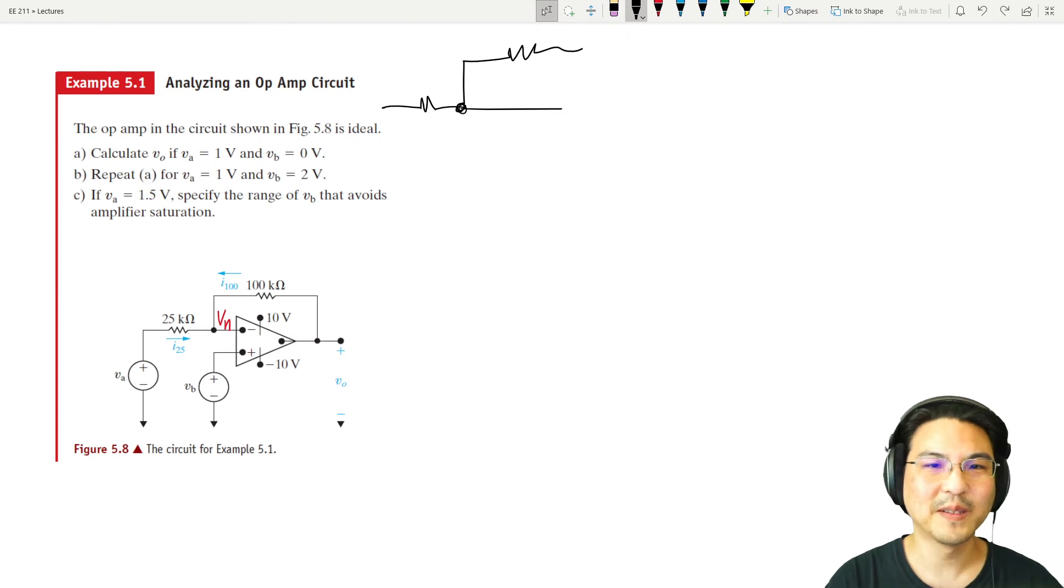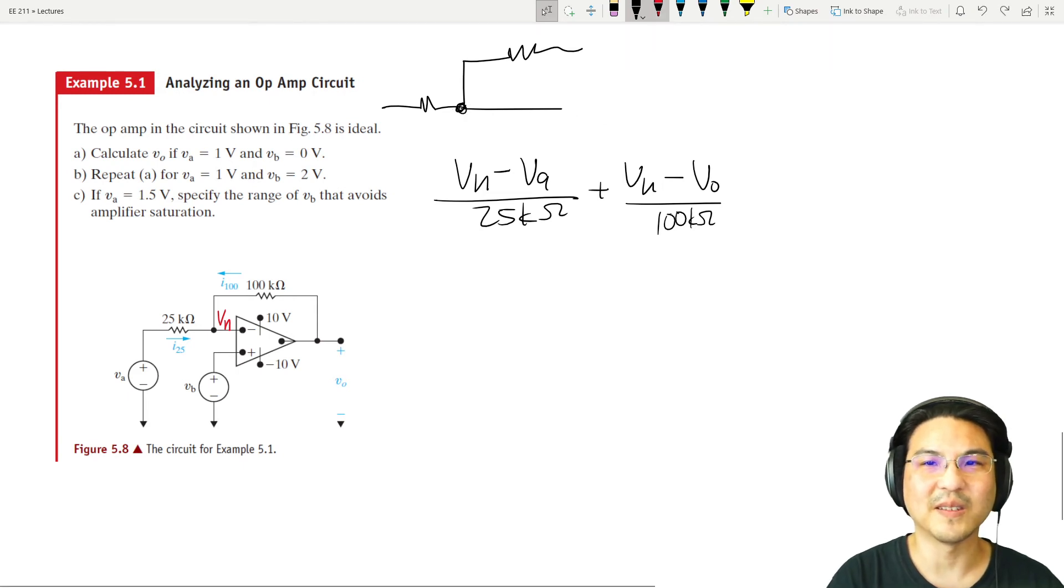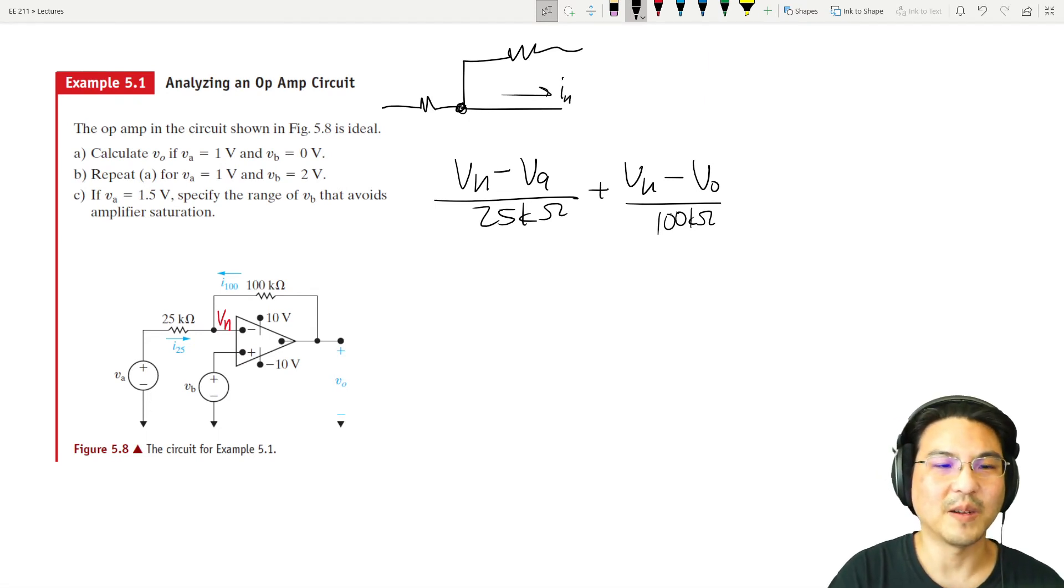Okay, so going this way toward the left, VN minus VA over 25K. Okay, now going this way. Plus VN minus, what's the voltage right here? VO, VO over 100K. Now this way. What is this? This is the current IN, right? Because over here is IN and over here is IP. Okay, so plus IN equals zero. Okay, so that's KCL at node N.